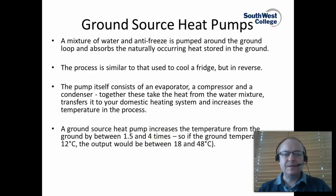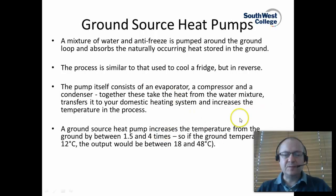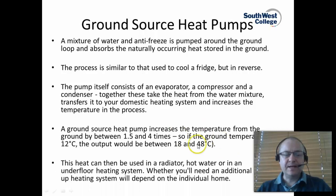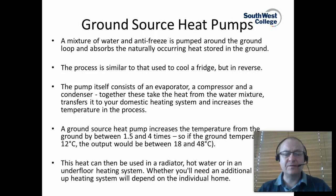A ground source heat pump typically increases the temperature from the ground by 1.5 to 4 times. So if the ground temperature is 12 degrees C, the output would be between 18 and 48 degrees C. Once you get above 40 degrees C it starts to become a temperature useful for washing and bathing. That heat can then be used in a radiator, hot water, or an underfloor heating system. You may also need an additional backup heating system, but that will depend on each individual home. 48 degrees C is particularly suitable for underfloor heating systems, which can run at a temperature of about 45 degrees C.